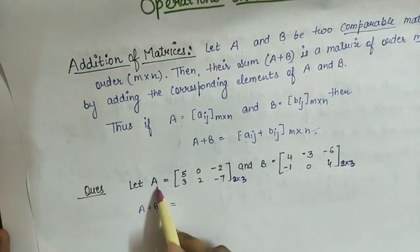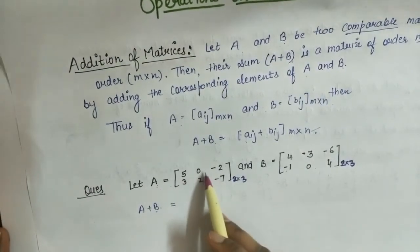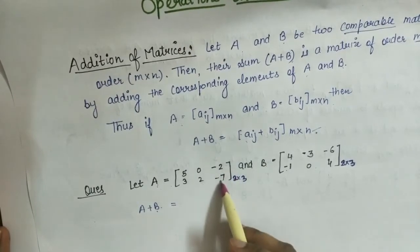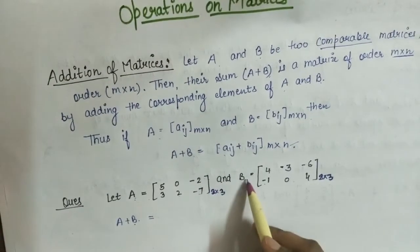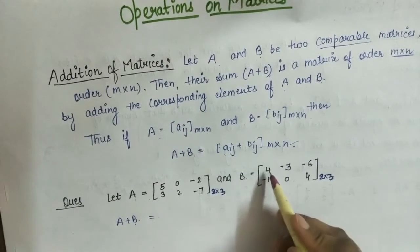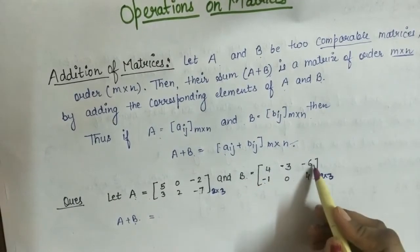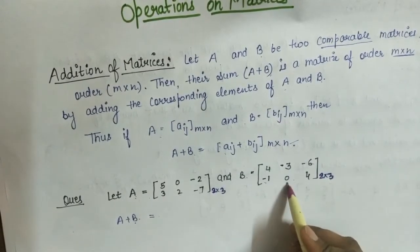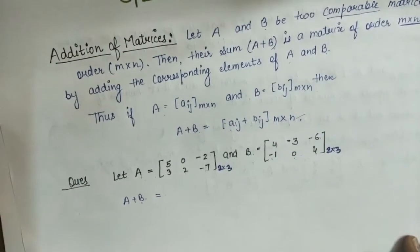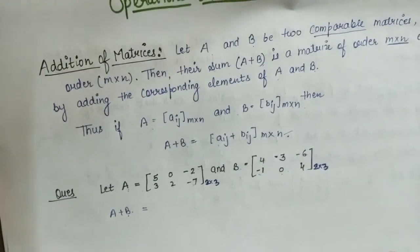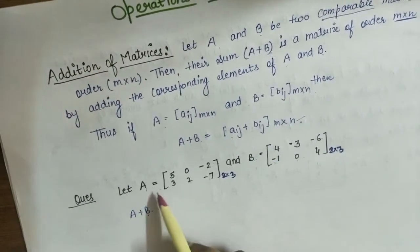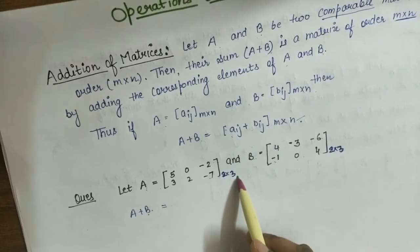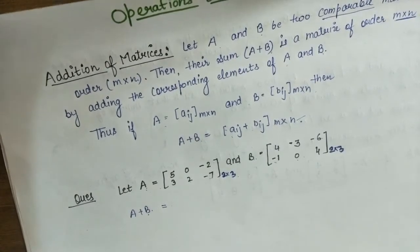Let A = [5, 0, -2; 3, 2, -7] and B = [4, -3, -6; -1, 0, 4], both matrices of order 2×3. Since both matrices have order 2×3, we can find the sum.